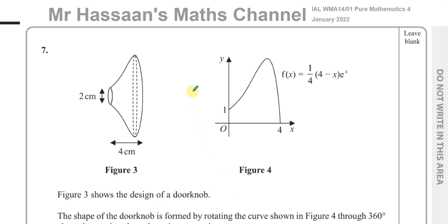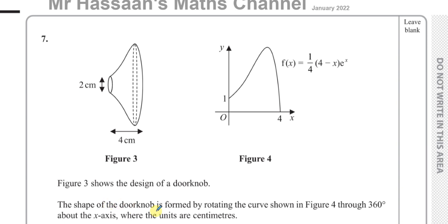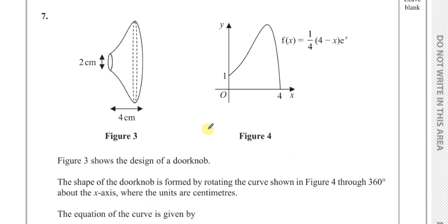Welcome back to Mr. Hassan's Maths Channel. I'm now answering question number 7 from the January 2022 Pure Mathematics P4 International A-Level NXL paper. This question is about the design of a doorknob. The shape of the doorknob is formed by rotating the curve shown in figure 4 through 360 degrees about the x-axis, where the units are in centimeters.